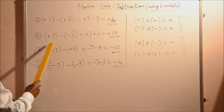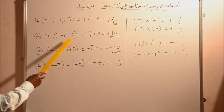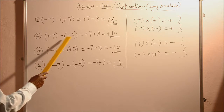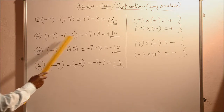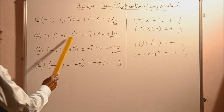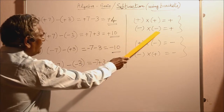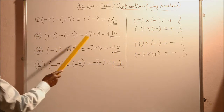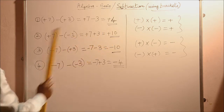You find the difference and put the sign of the bigger number. The next term: plus 7 minus of minus 3. That is minus into minus. When you remove the bracket, you are multiplying these two signs. Minus into minus gives you the same sign, so you get only plus. Therefore, plus 7 plus 3, that is equal to plus 10.